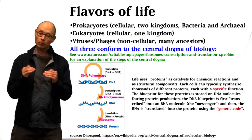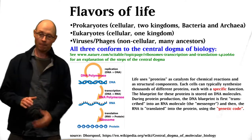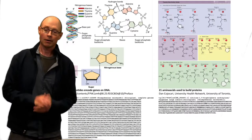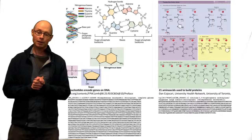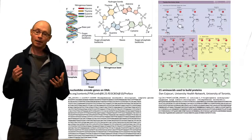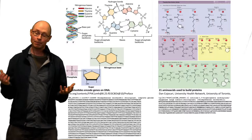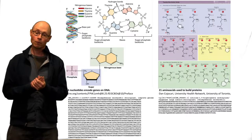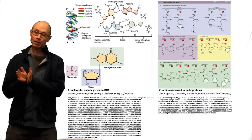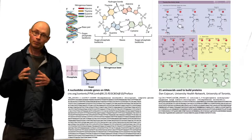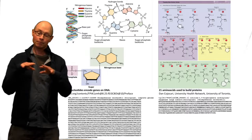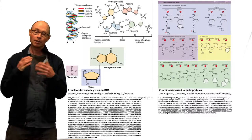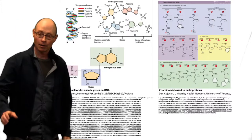Then follows translation, where the RNA information is translated into protein, which is the actual machine that does things. Both DNA and protein are polymers. In DNA, the information is encoded in bases — every position is one of four bases, and three of those positions form a codon that encodes for an amino acid. Amino acids are the building blocks and monomers that form the protein polymer.